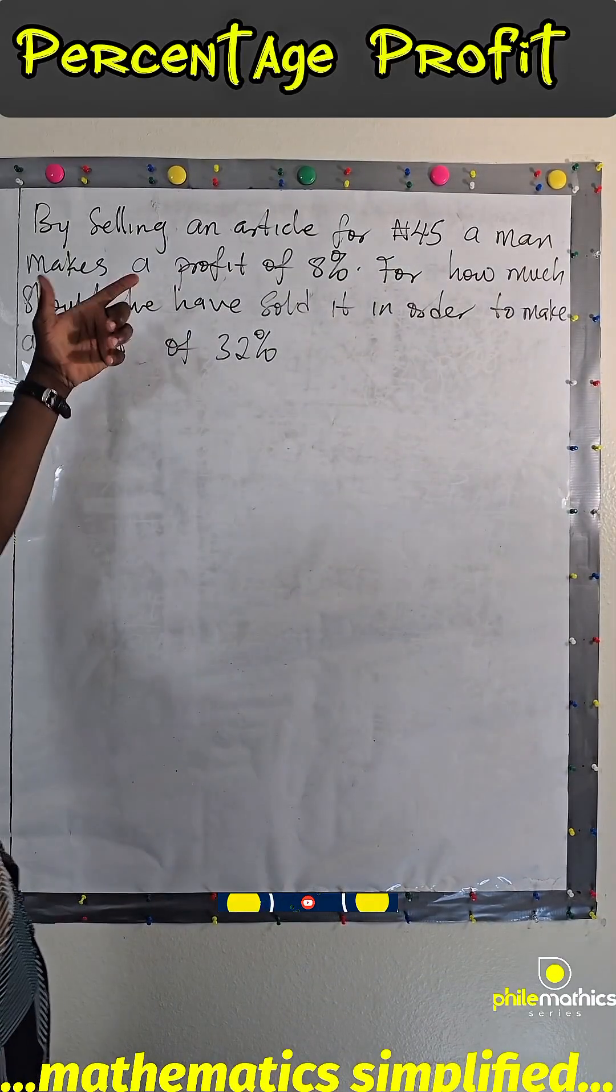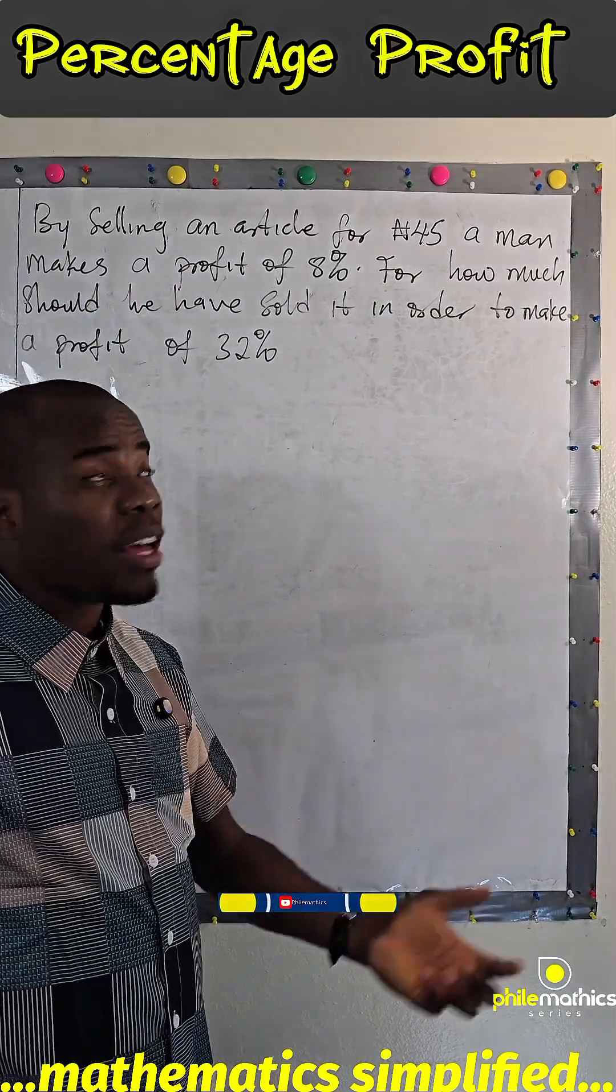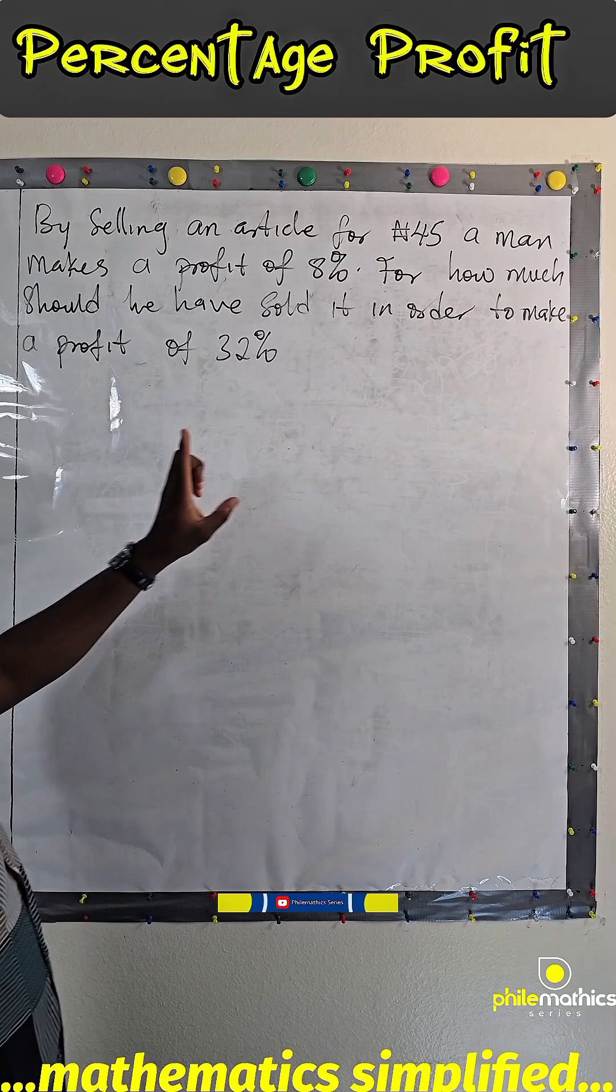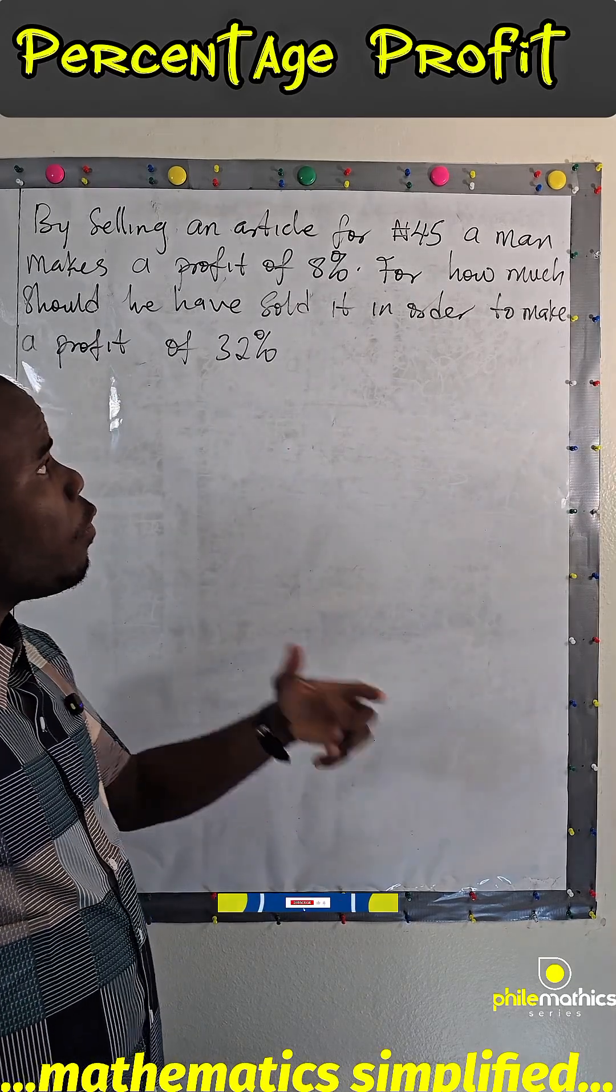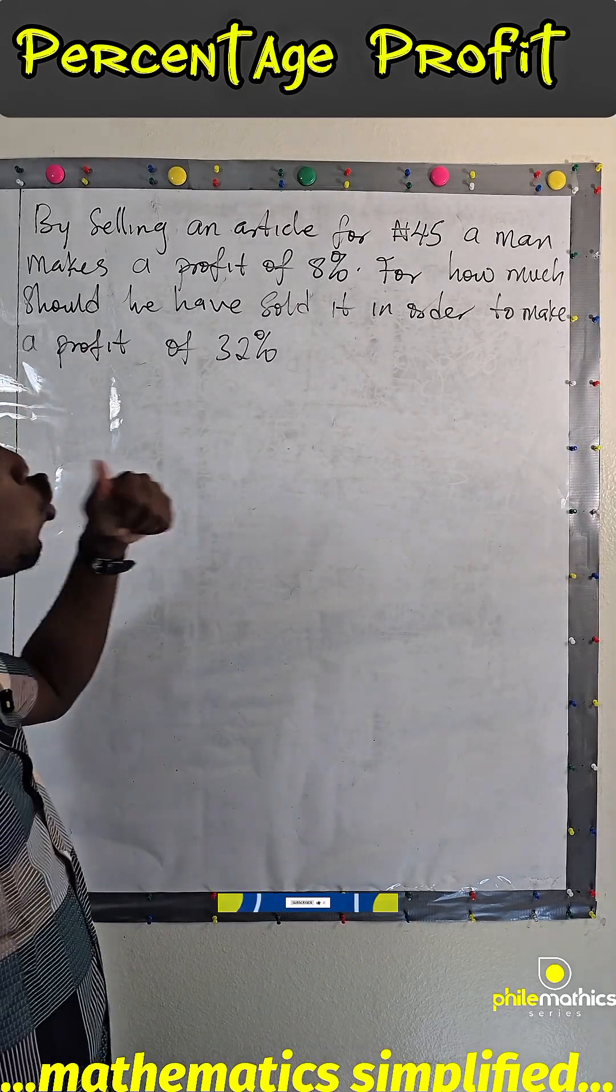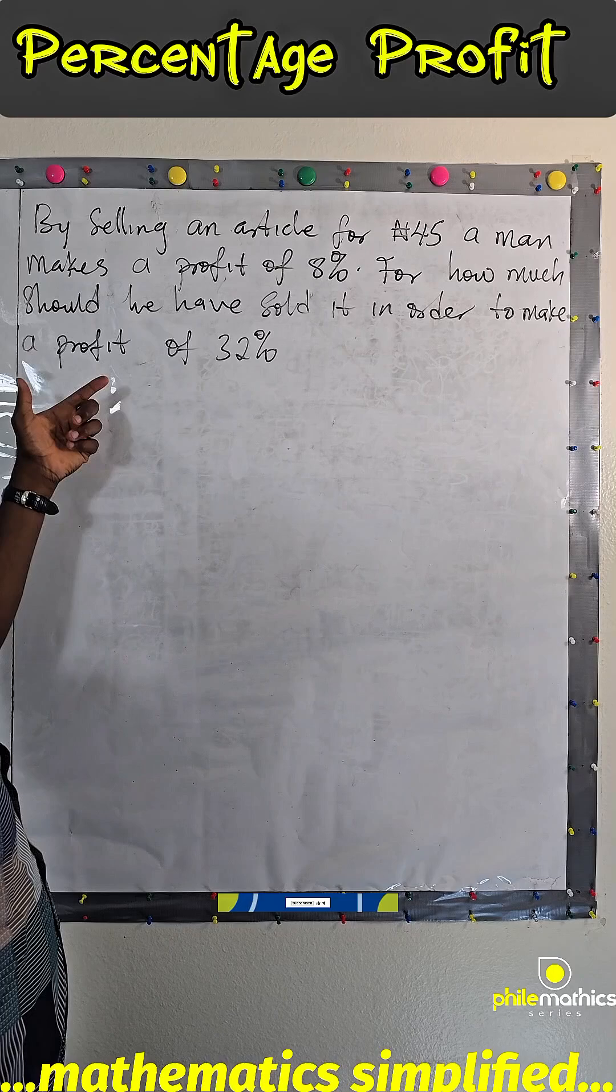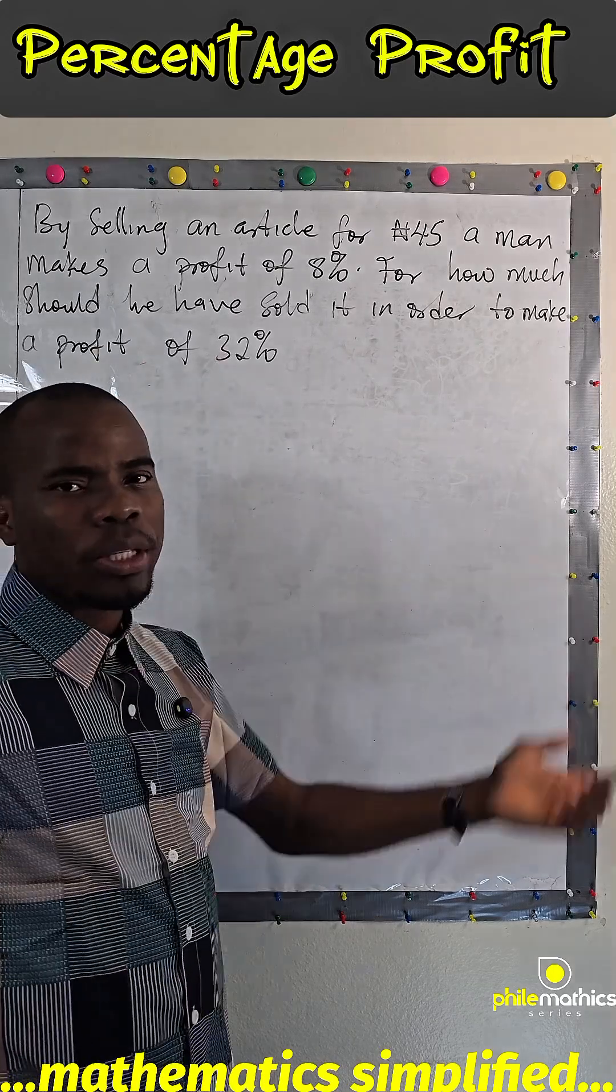This problem says, by selling an article of 45 Naira, a man makes a profit of 8%. For how much should he have sold it in order to make a profit of 32%?